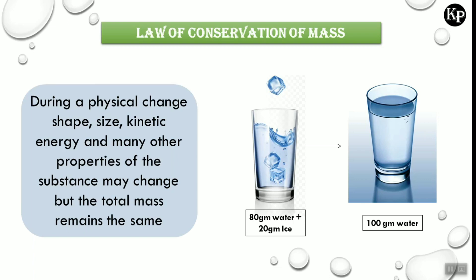During the physical change, shape, size, kinetic energy and many other properties of the substance may change, but the total mass remains the same. You can see here in the first glass of water — 80 grams of water and an ice cube having 20 grams of ice. After the physical change, the solid is converted into liquid state. Now if we measure the mass of this substance, you can see 100 grams of water. So after the physical change, there is no change in the mass — this is the law of conservation of mass.